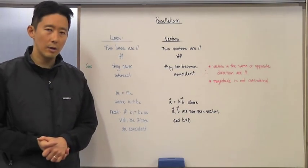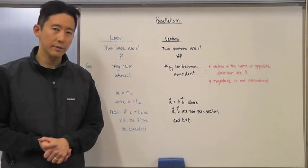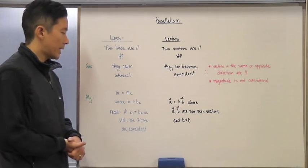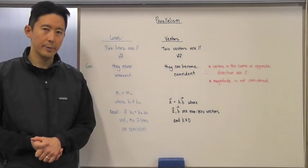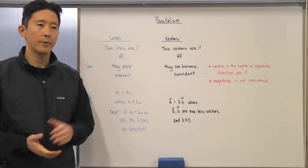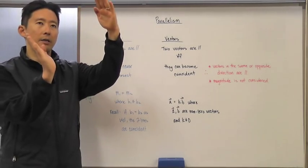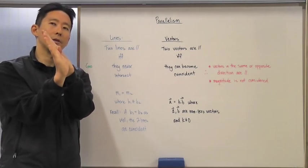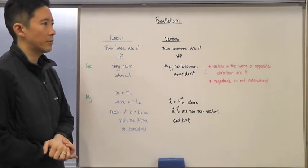Recall that if we said that in addition to the slopes being the same, the y-intercepts are the same as well, then the two lines are not necessarily just parallel—they're right on top of each other. If that situation occurs, we call those two lines coincident.